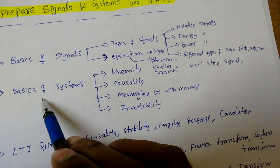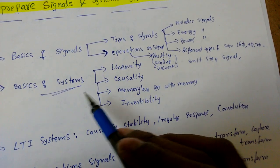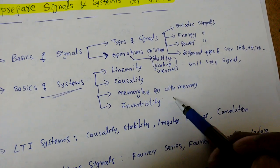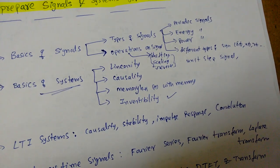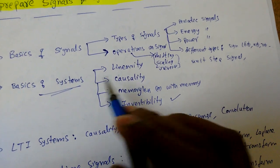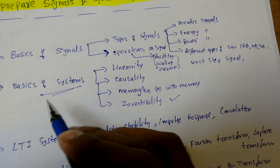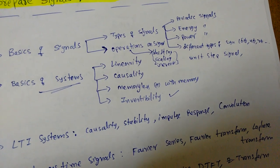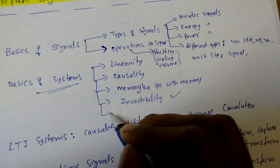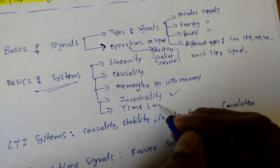Next we need to learn about basics of systems — what type a system is: linear, causal, memoryless, with memory, or invertible. These properties of systems we need to learn. Frequently we get questions like: is a given system linear or nonlinear, time-invariant or time-variant?